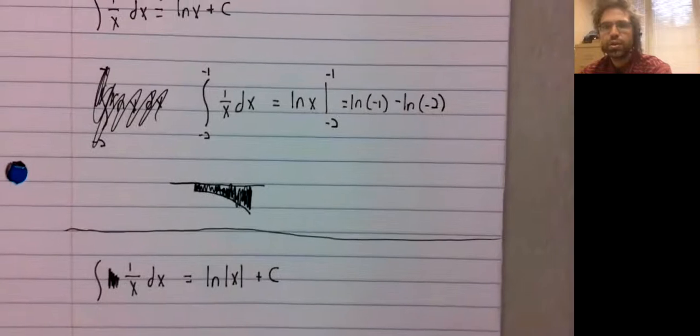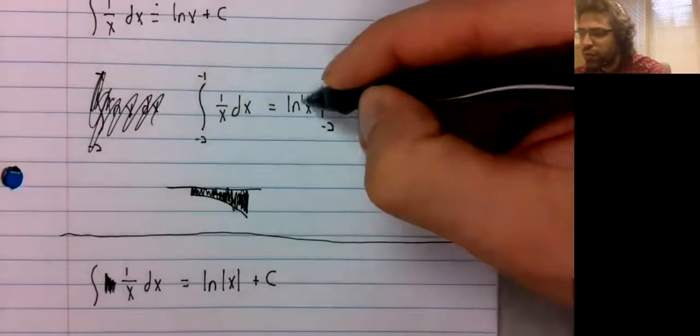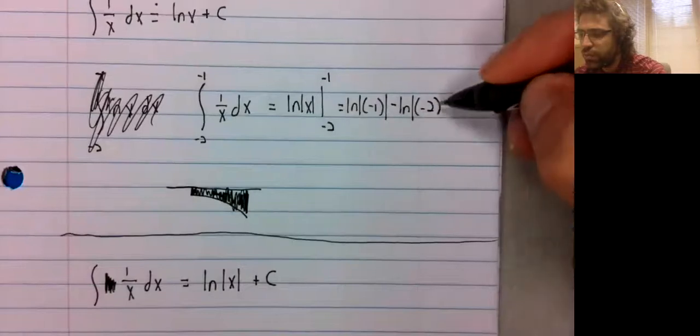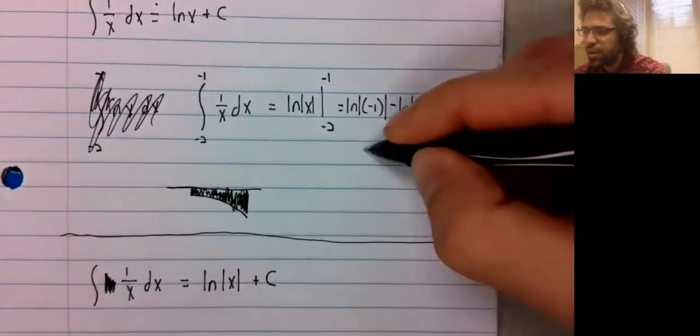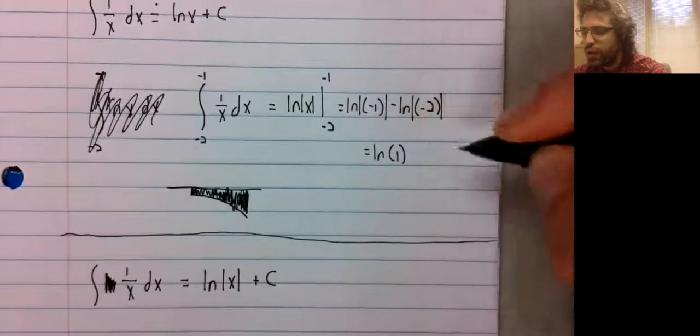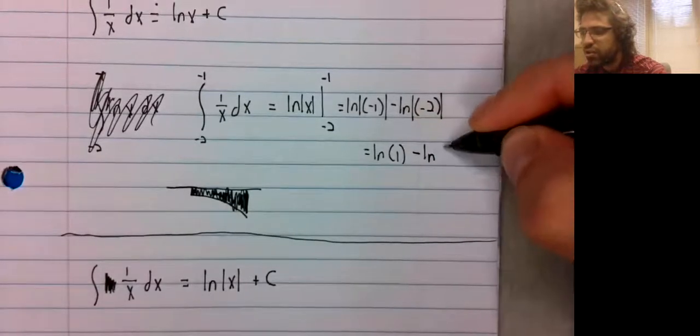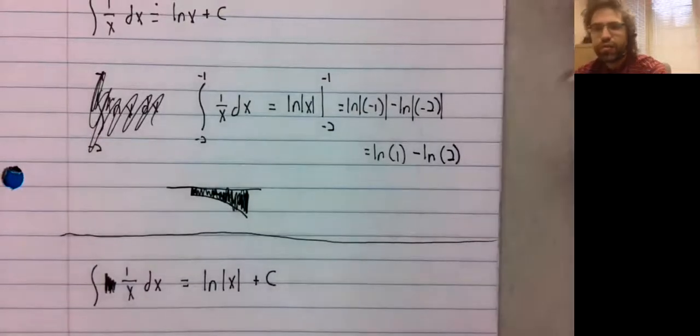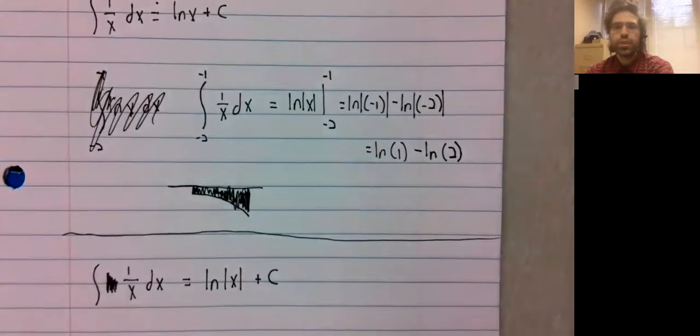So, going back here, we throw in an absolute value. And now we've got the logarithm of 1 minus the logarithm of 2, which is a perfectly nice, well defined thing. Okay, thank you.